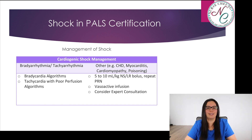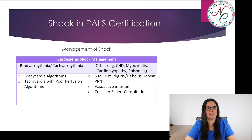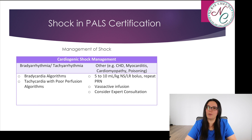Other potential causes such as myocarditis, cardiomyopathy, and poisoning — we're going to give a little bit less fluid, either 5 to 10 mLs per kilogram of normal saline or lactated ringer boluses, and we're going to repeat as needed because we have a problem with the pump of our heart. We also might want to look at vasoactive infusions and consider expert consultation for these patients.